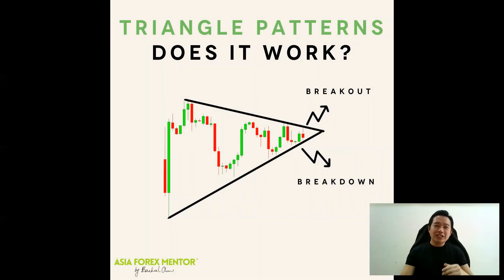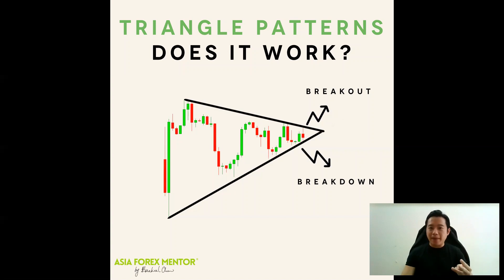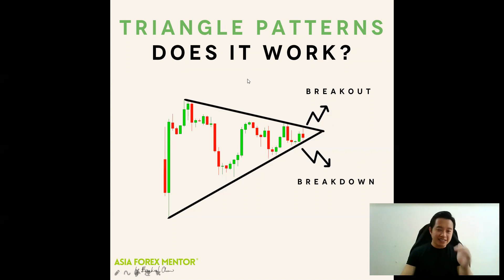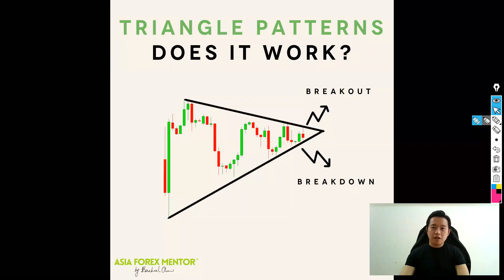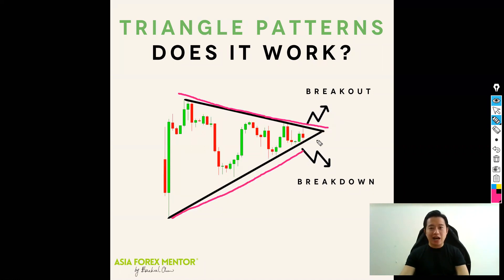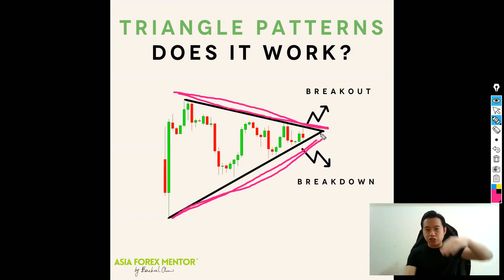There are three kinds of triangle patterns. The main commonly known types are the symmetrical triangle, the ascending triangle, and the descending triangle. A symmetrical triangle looks like the top is going down and the bottom is going up — so they are the same shape.